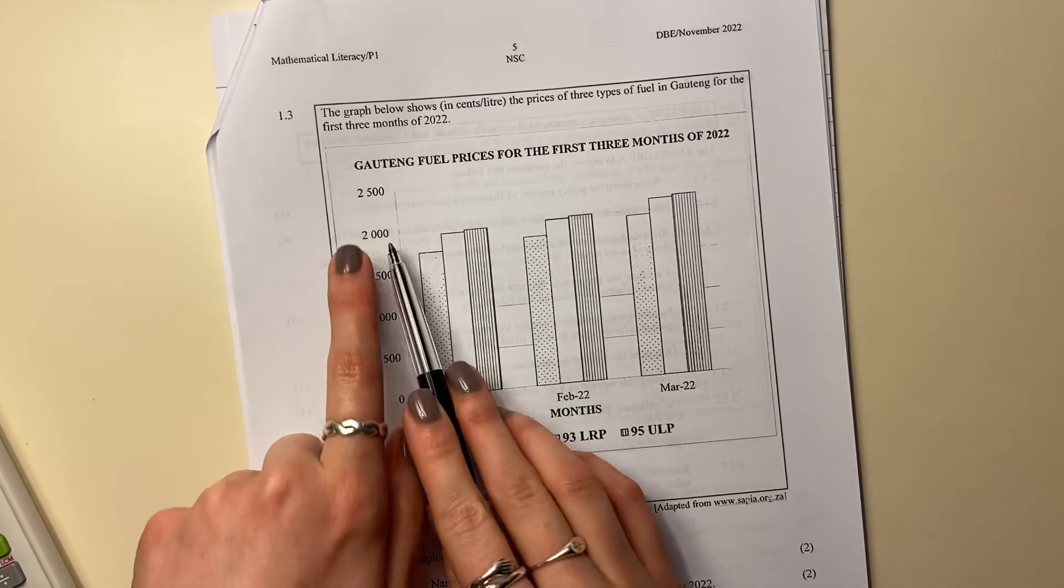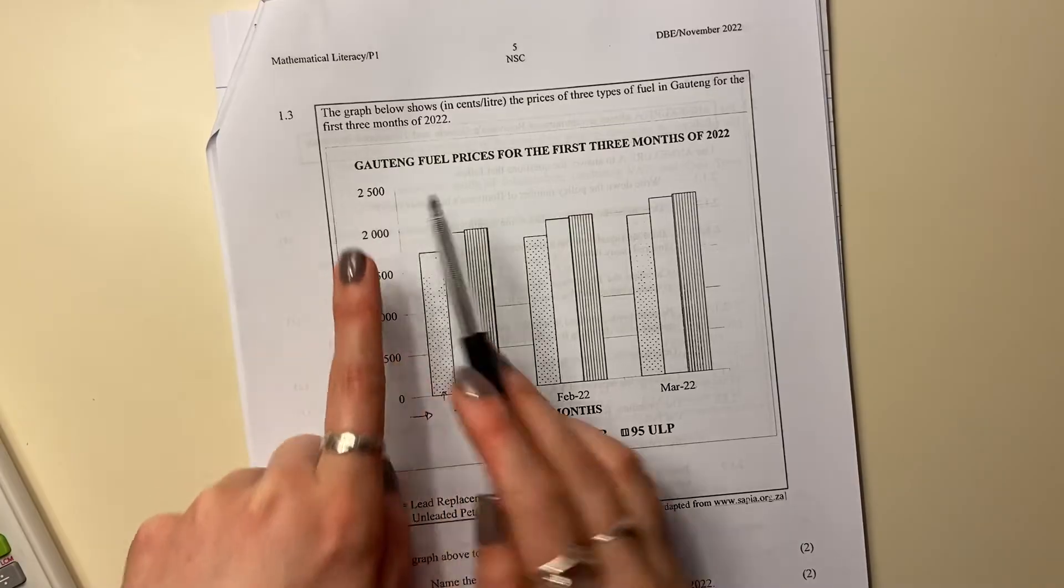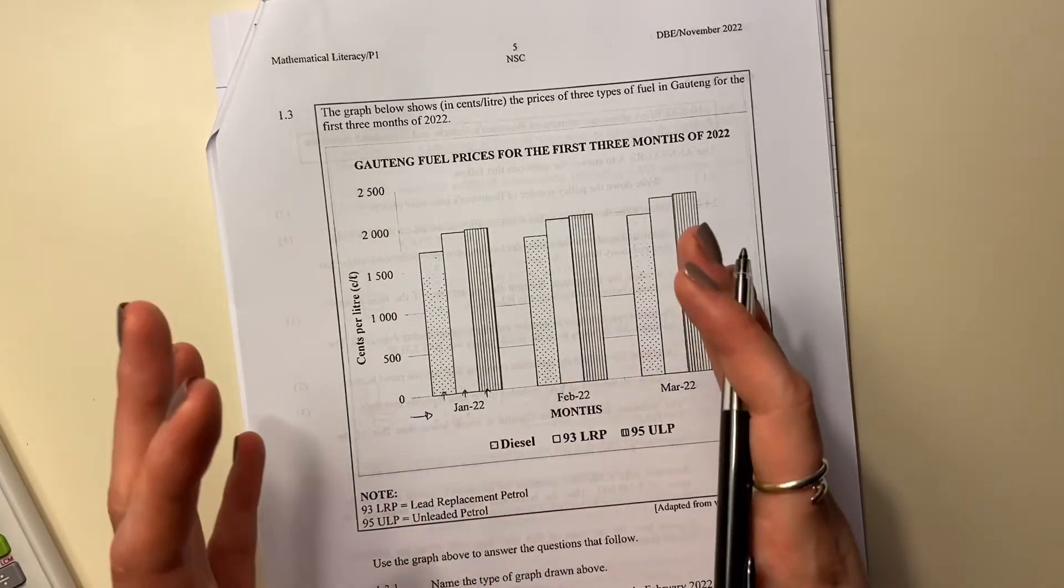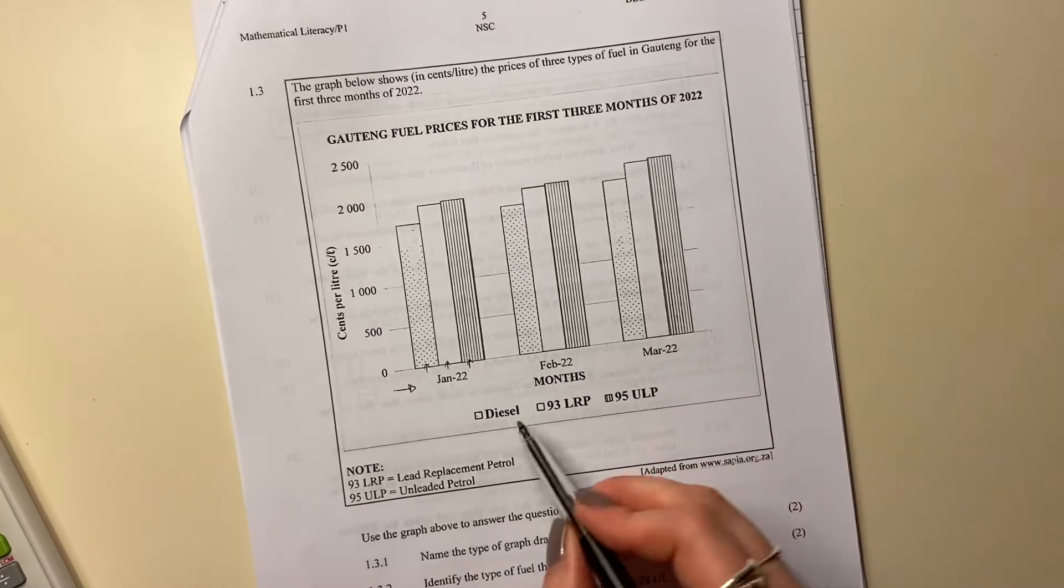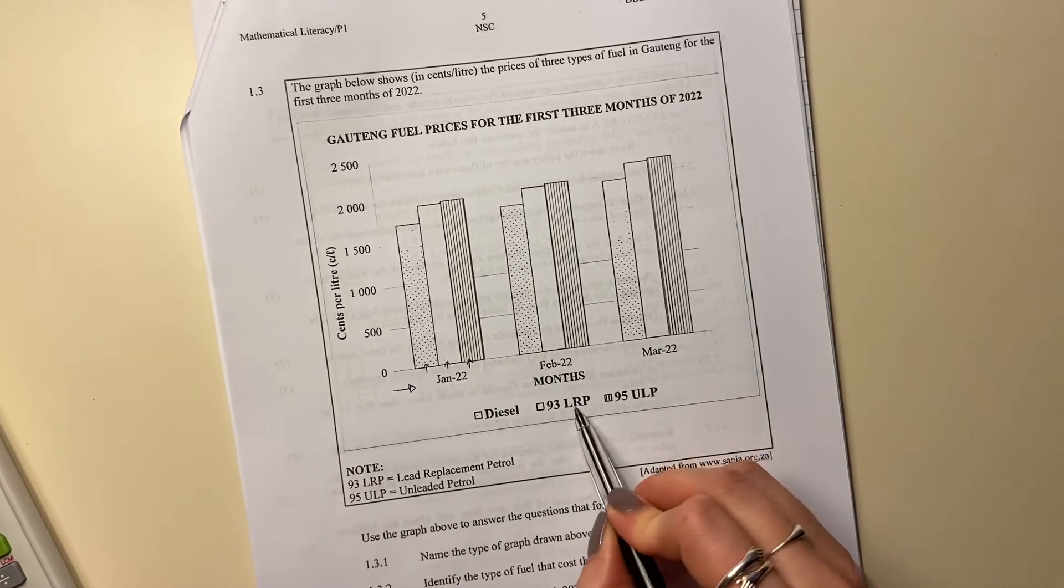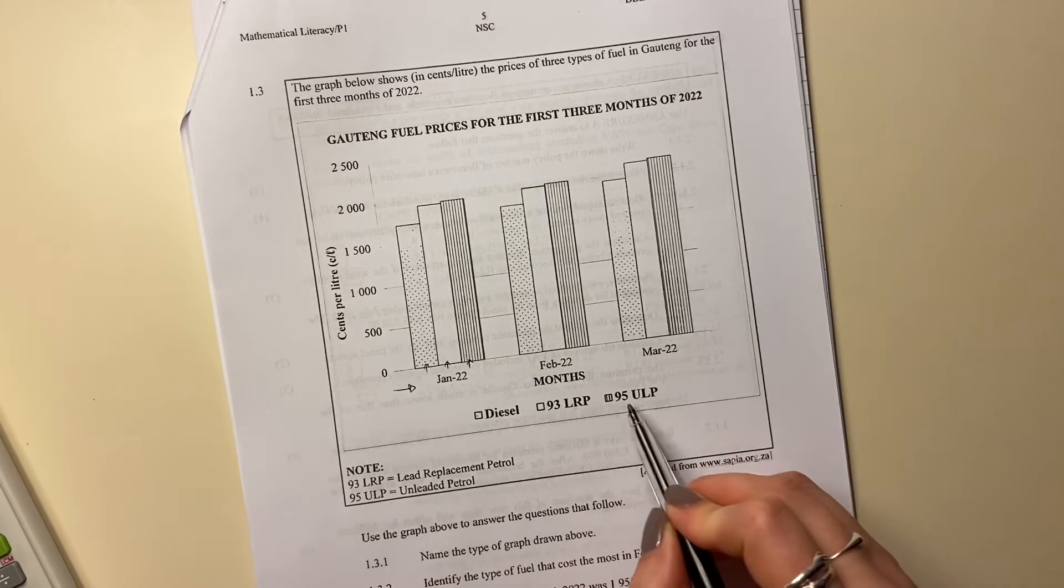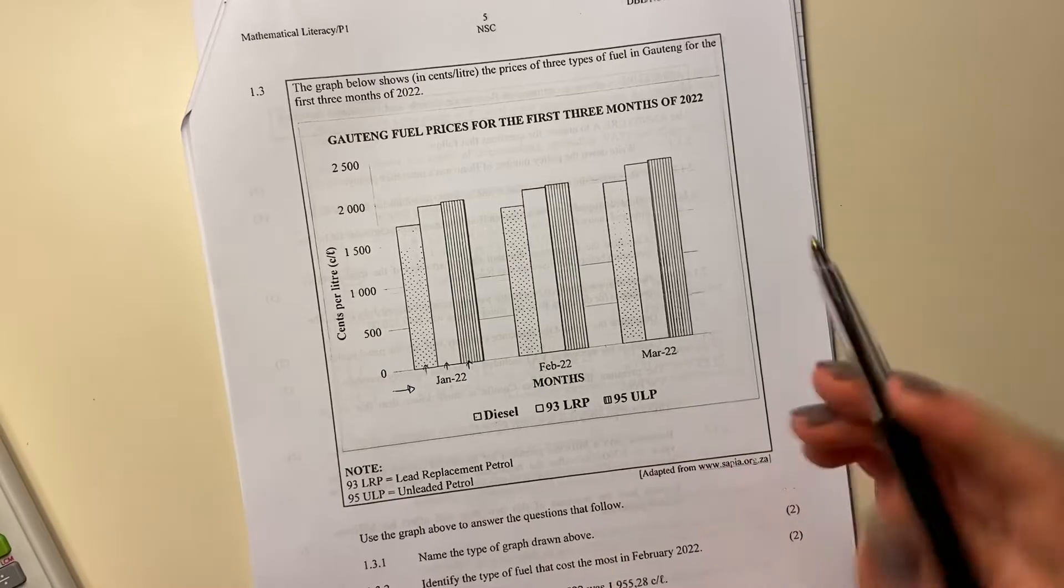This one's 10 rand, 15 rand, 20 rand, 25 rand. So make sure that you're able to understand the mechanism of what's being shown. Three different things: diesel, lead replacement petrol or 93 unleaded, and then 95 unleaded. And these are all the different prices.